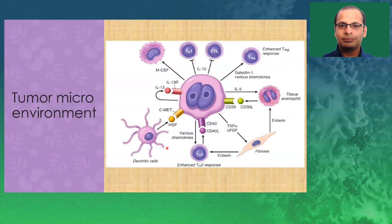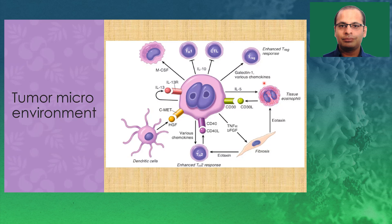This is a very important slide. The Hodgkin cell comprises only around 1 to 2% of the tumor burden in the whole histopathology specimen. All the other cells are the surrounding cells — the inflammatory milieu — in which they are present, in the form of eosinophils, fibrosis, fibroblasts, dendritic cells, TH cells, cytotoxic lymphocytes, and so on. There is a lot of interaction between the Hodgkin cells and all these cells, which leads to a proliferative advantage for the Hodgkin cells and a variable effect on host immunity, leading to a kind of immunosuppressive state in the host.